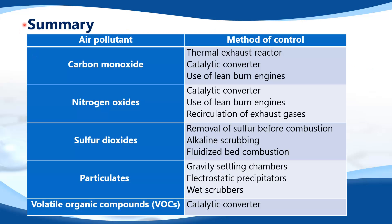Finally, here is a summary of air pollutants and their methods of control. For carbon monoxide: thermal exhaust reactor, three-way catalytic converter, or lean burn engine. For nitrogen oxides: catalytic converter, lean burn engine, or recirculation of exhaust gases. For sulfur dioxide: remove sulfur before combustion, alkaline scrubbing, or fluidized bed combustion. For particulates: gravity, settling chambers, electrostatic precipitators, or wet scrubbers. For volatile organic compounds: catalytic converter.